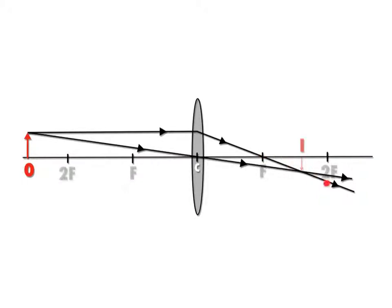It's formed by rays that really meet, so it's a real image. It's also upside down with respect to the object which means it's an inverted image and it's considerably smaller than the object which means it's a diminished image which is the opposite of being magnified. So we have a diminished, real, inverted image.